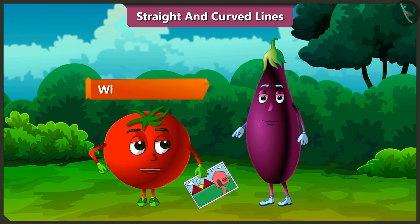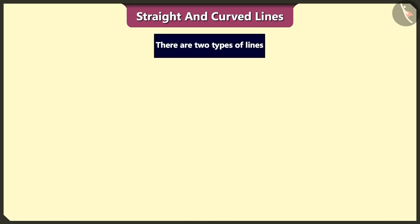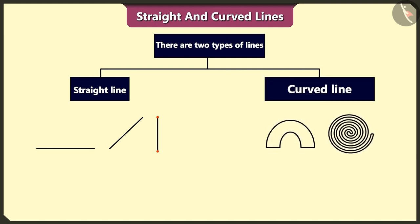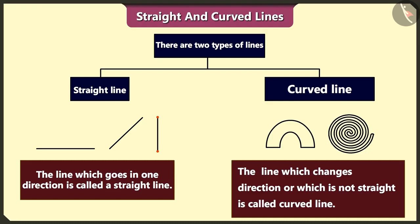But Tingu, what is this line? The sign made from one dot to other dot is called line. There are two types of lines, straight line and curved line. The line which goes in one direction is called a straight line. And the line which changes direction or which is not straight is called curved line.